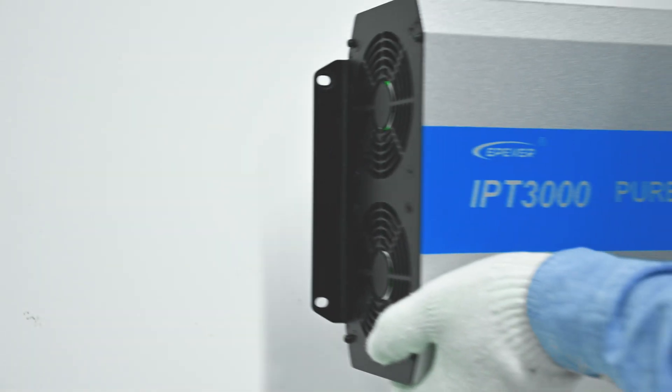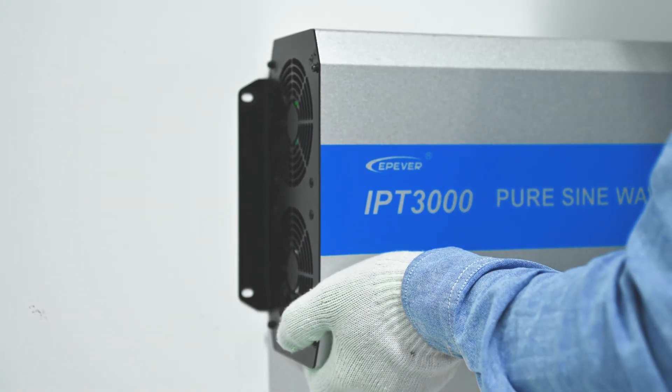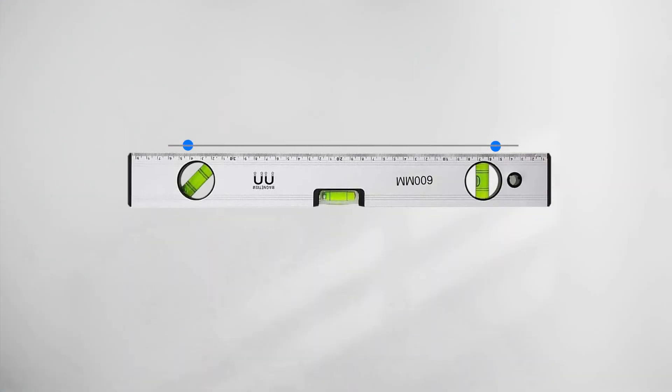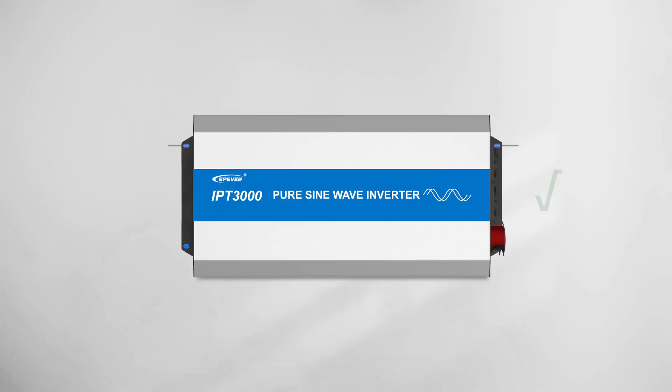Everything is ready. Let's start the installation. Put the inverter on the mounting surface. Apply a leveling tool to obtain a proper inclination level before marking the holes on the mounting surface.